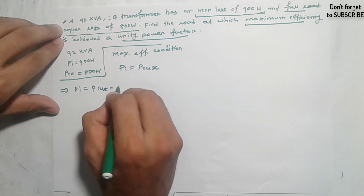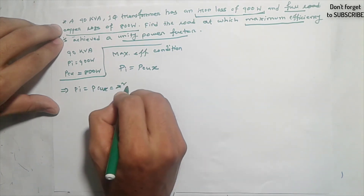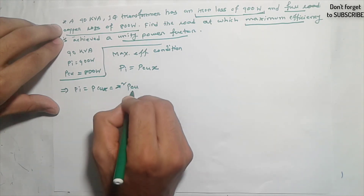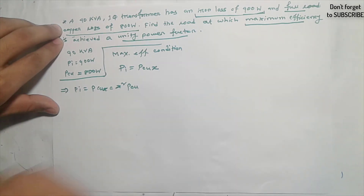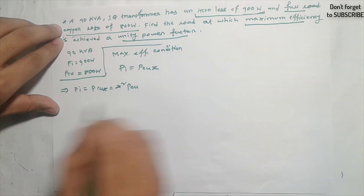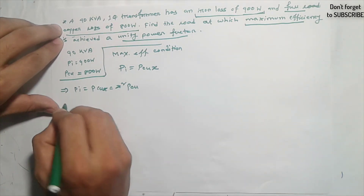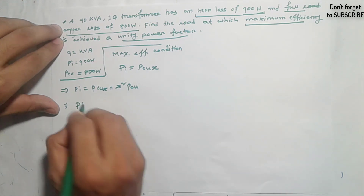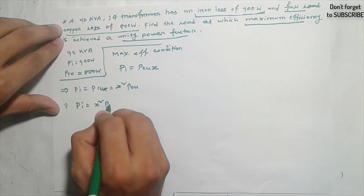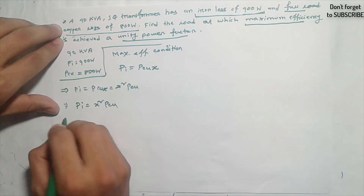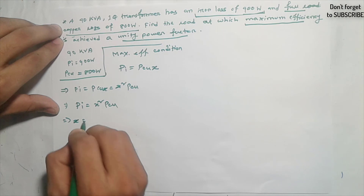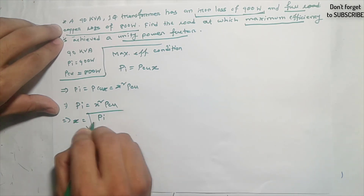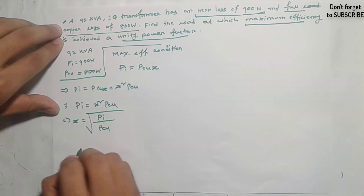PCU(x) equals x squared times the full load copper loss. So PI equals x squared times PCU full load. Therefore, x equals the square root of iron loss divided by full load copper loss.